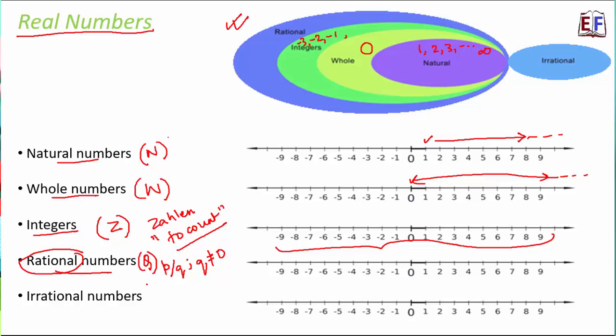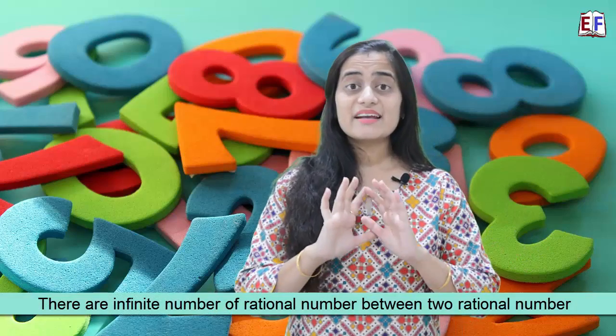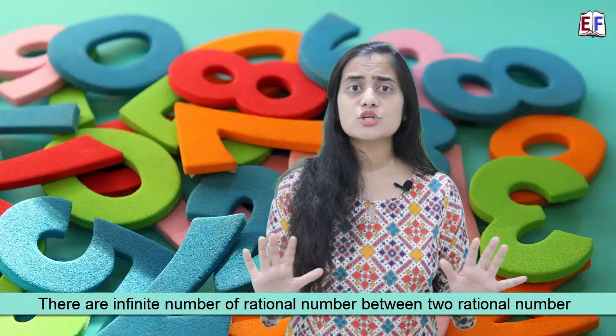Irrational numbers are all those numbers which cannot be represented in the form p/q. Numbers like √2, √3, √5, and π are irrational. We don't see them directly on the number line, but they do exist on it. We will learn how to locate an irrational number on the number line a little later.